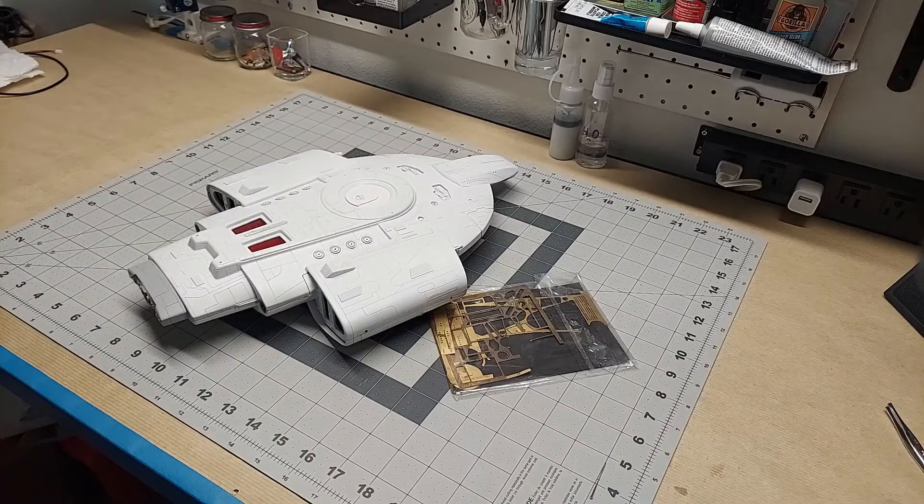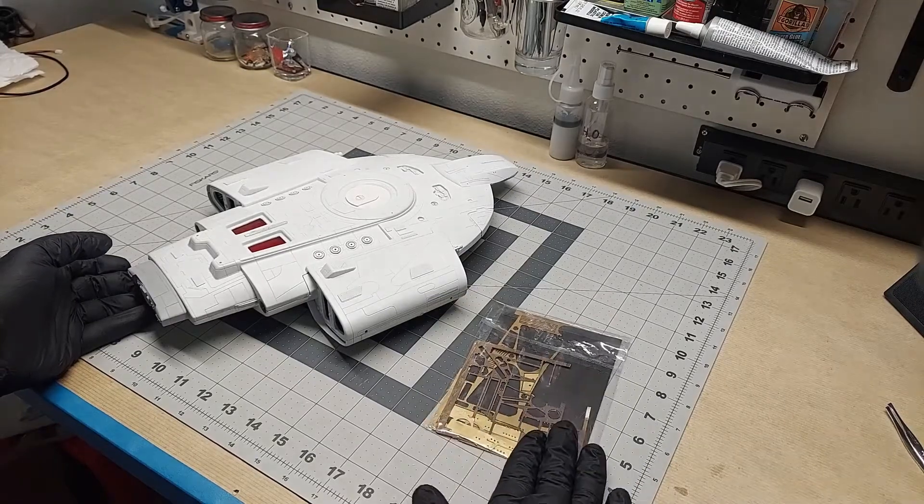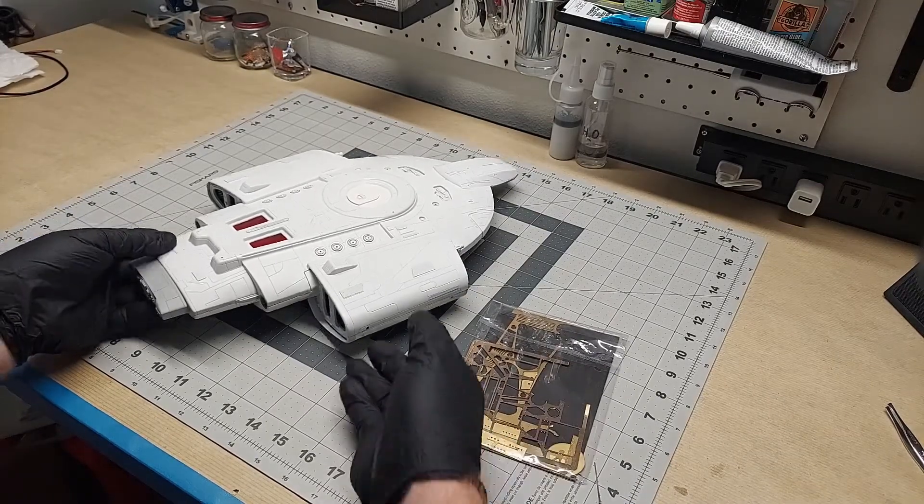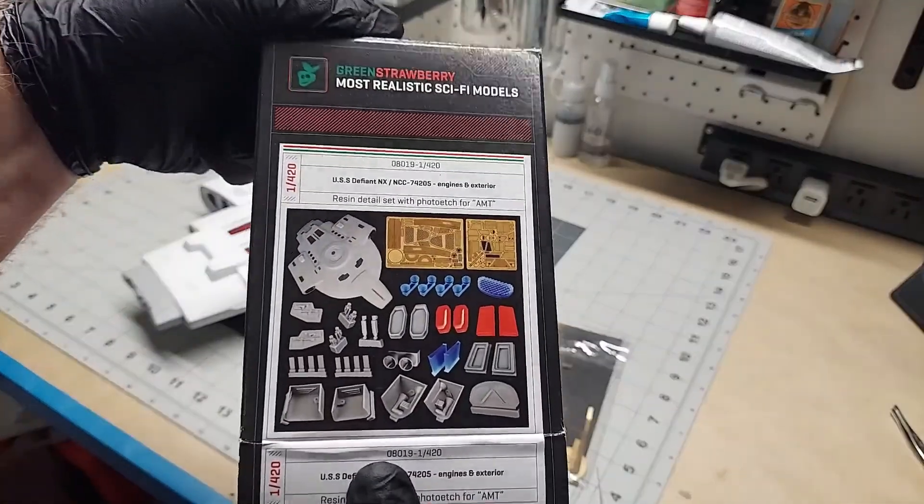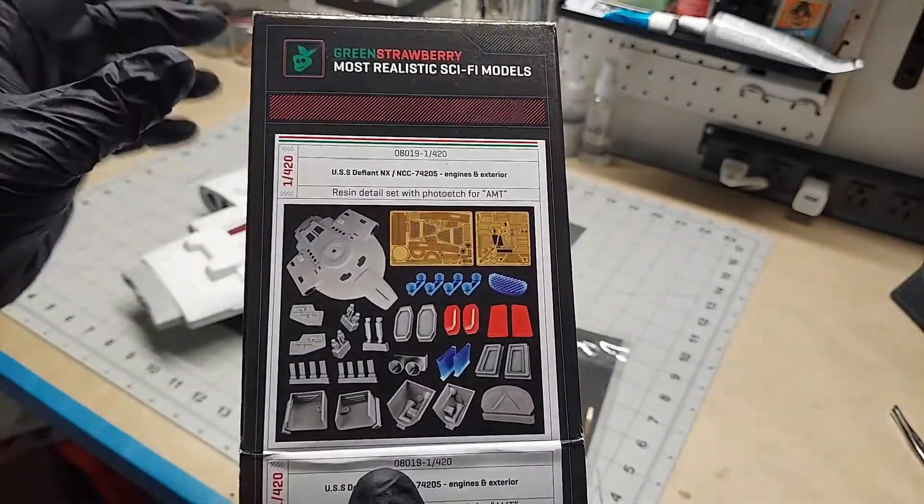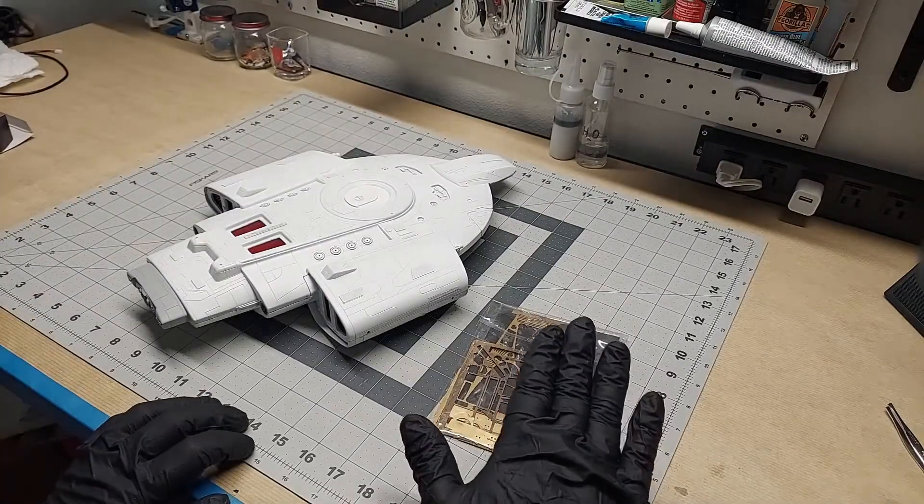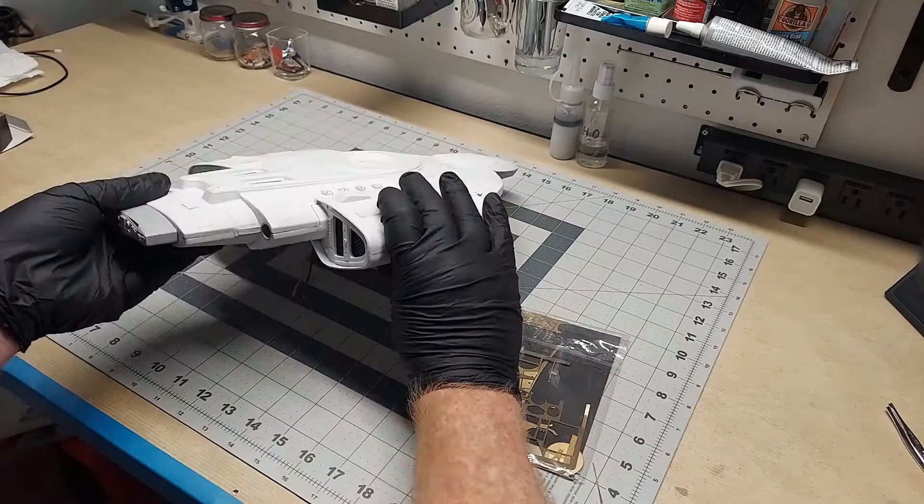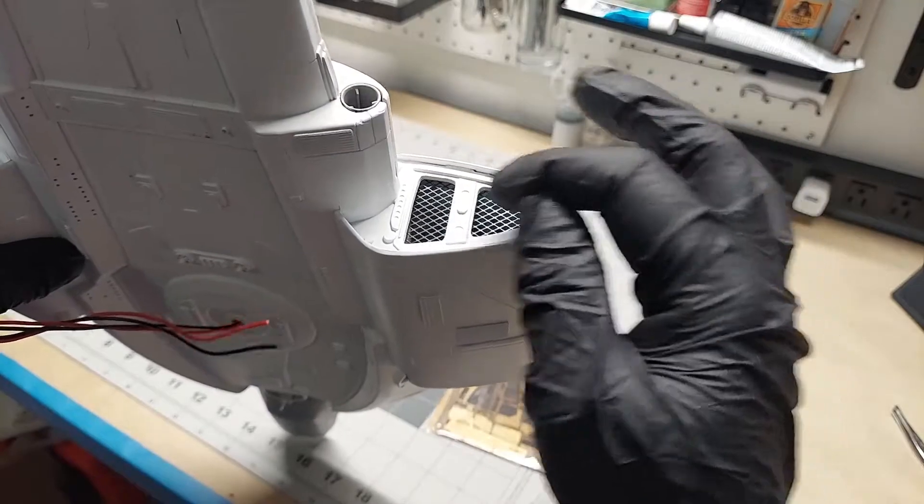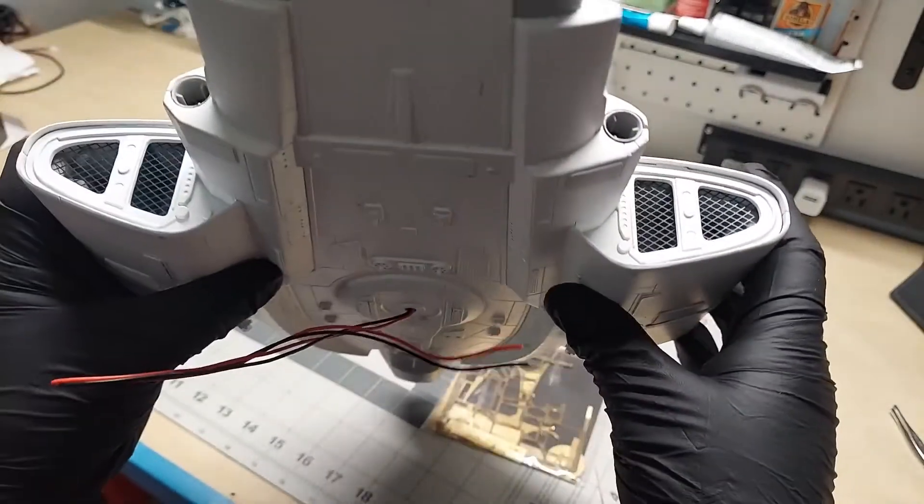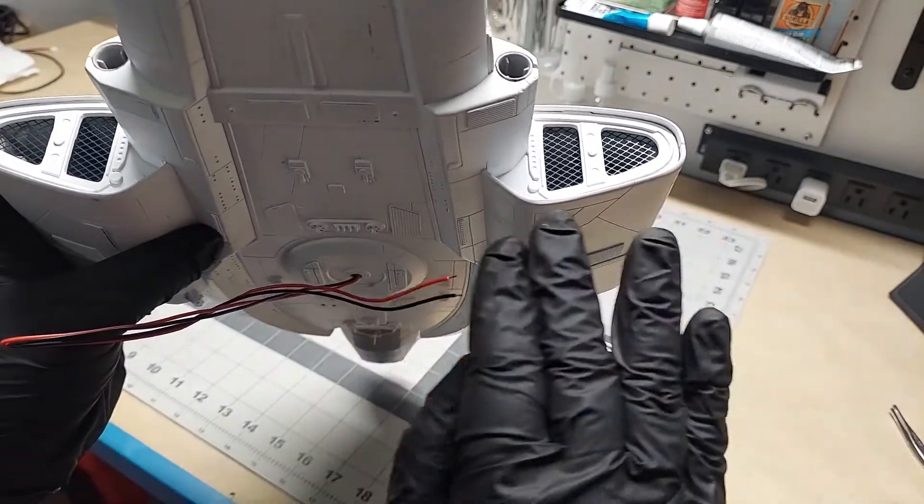One of the things I talked about in that video was the photo etching parts that I bought as part of an aftermarket kit. This Green Strawberry aftermarket parts has some plastic parts and photo etch detail pieces, and some of those I had to make a dark color, like these grills on the back of the warp engines.